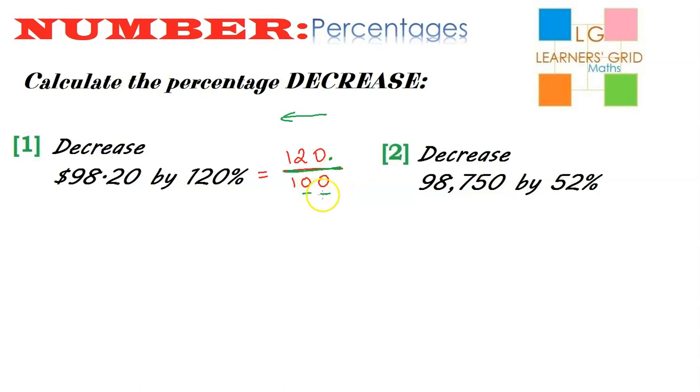So this decimal point is going to move to the left, one, two jumps. So now I know that 120% as a decimal is 1.2.